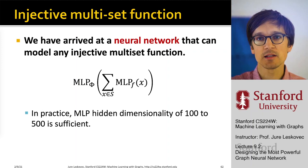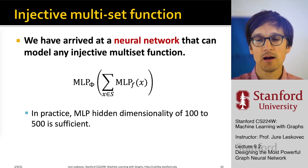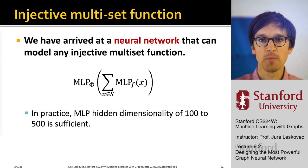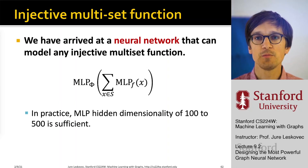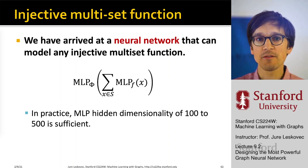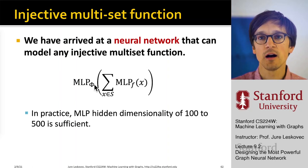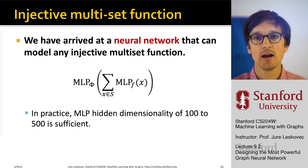Any injective multiset function can be written with two functions f and phi: f is applied to every element, summed up, and passed through phi. Because MLP can approximate any function, we can model f and phi with MLPs to create an injective multiset aggregation. This gives us a neural network that can model any injective multiset mapping.